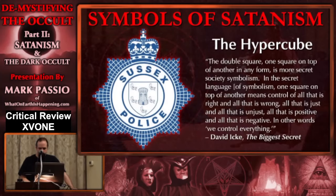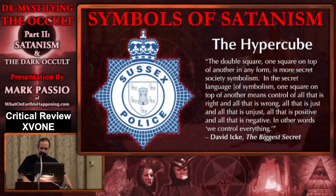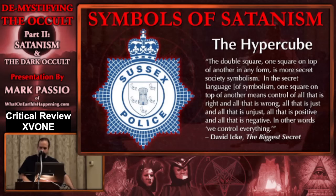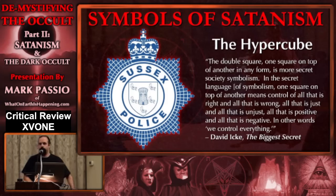Here it is in the form of the double square. This is from David Icke's book The Biggest Secret, where he describes the double square. One square on top of another in any form is secret society symbolism. In the secret language of symbolism, one square on top of another means control of all that is right and all that is wrong — moral relativism — all that is just and all that is unjust, man's law, all that is positive and all that is negative. In other words, we control everything.